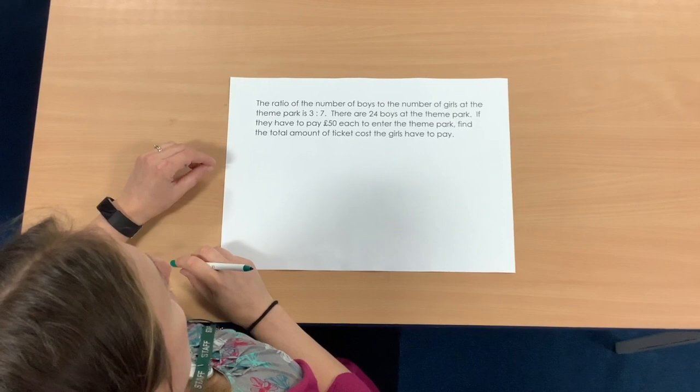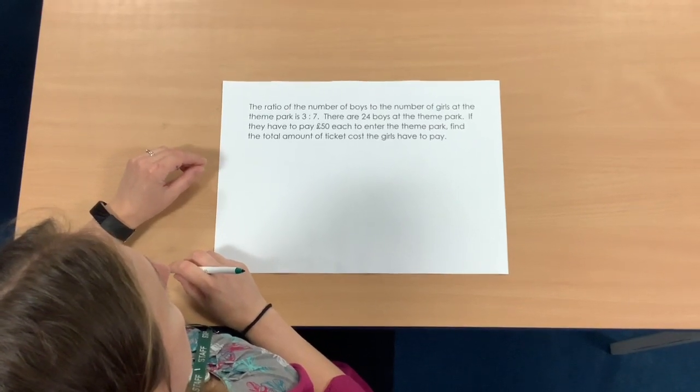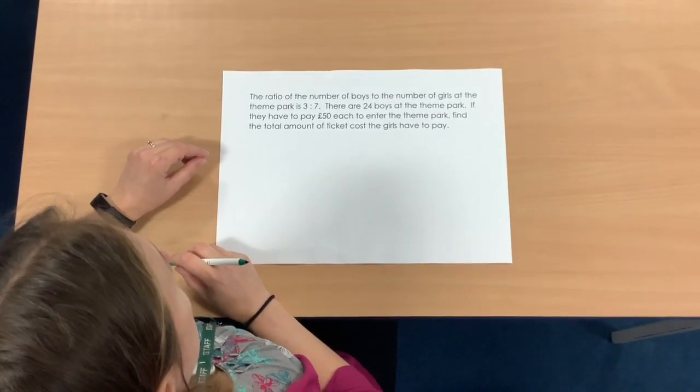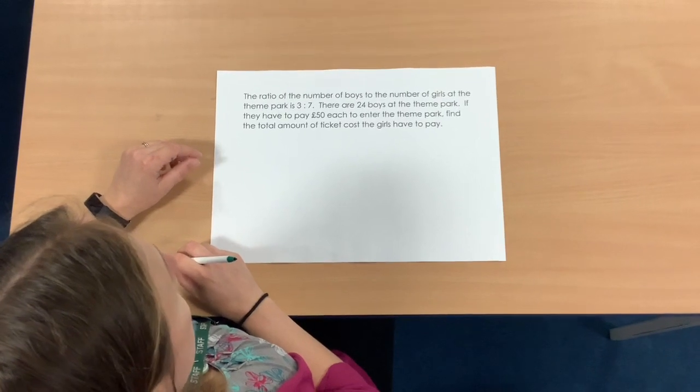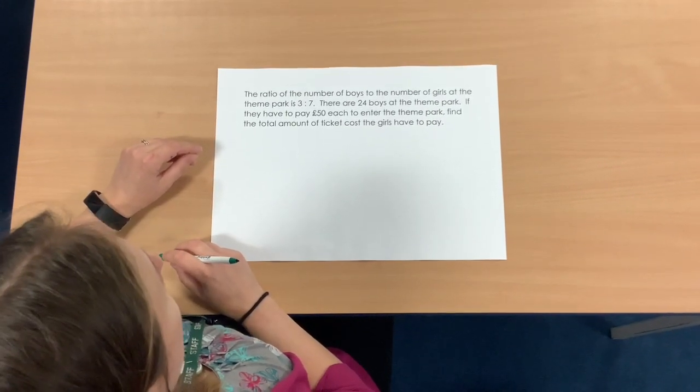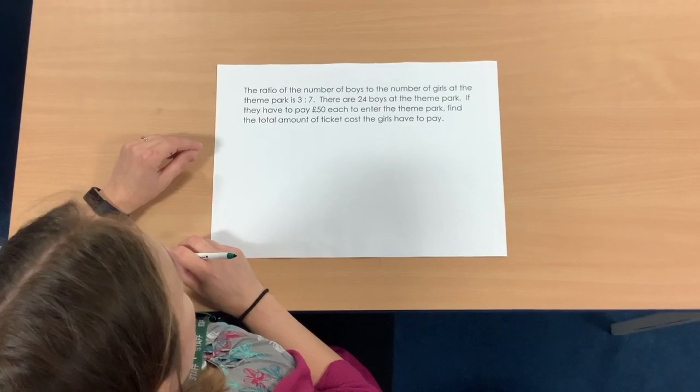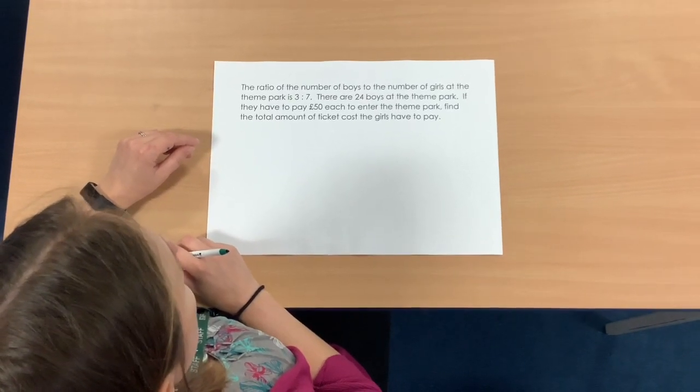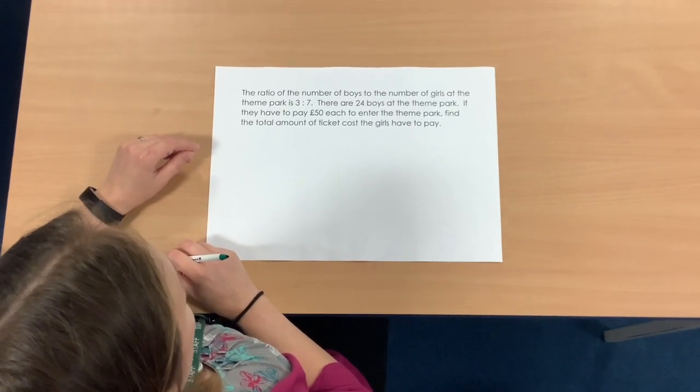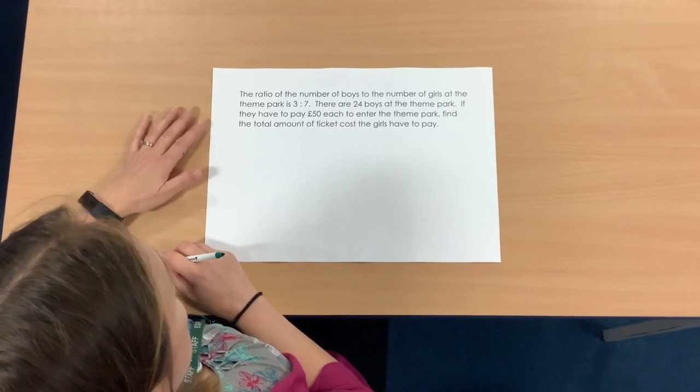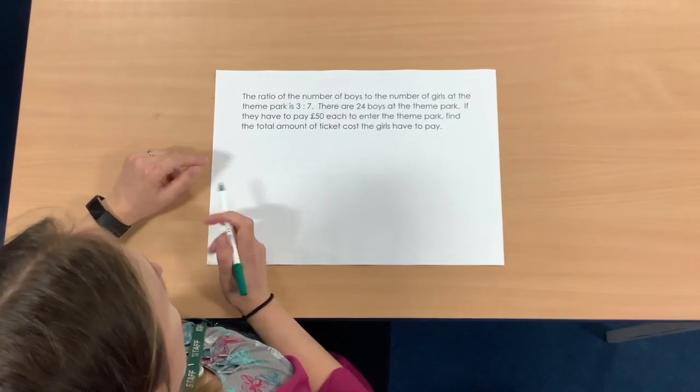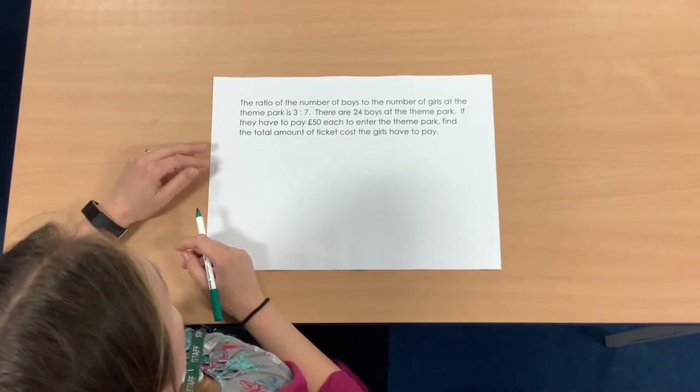So, the ratio of the number of boys to the number of girls at the theme park is 3 to 7. There are 24 boys at the theme park. If they have to pay £50 each to enter the theme park, find the total amount of ticket costs the girls have to pay. So again, it's quite wordy, there's quite a lot in there, and we are going to have to do more than one step to find the answer.